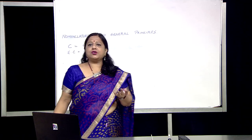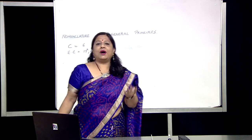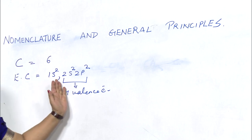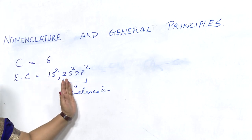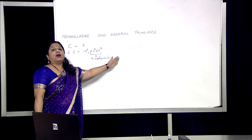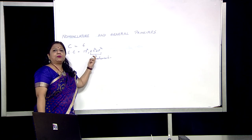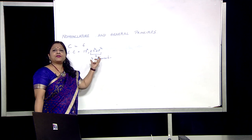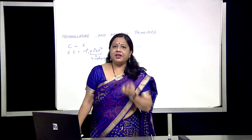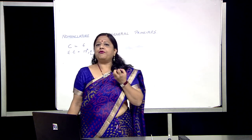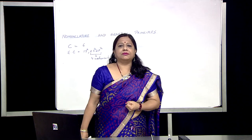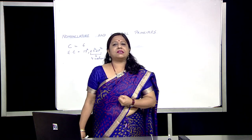But carbon does not do any of this. Why? Because it is very difficult for carbon to lose all four electrons, as it requires higher energy. On the other hand, if it accepts four electrons, then it becomes very difficult for the nucleus of the carbon atom to hold all ten electrons together. Therefore, carbon forms four covalent bonds by sharing valence electrons with other atoms. This is known as tetravalency of carbon.